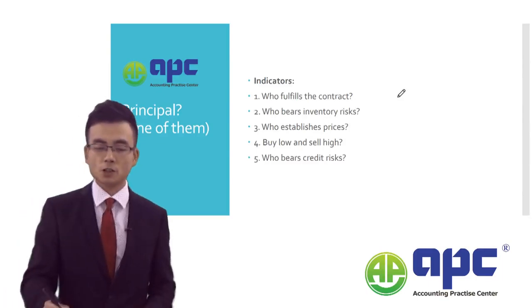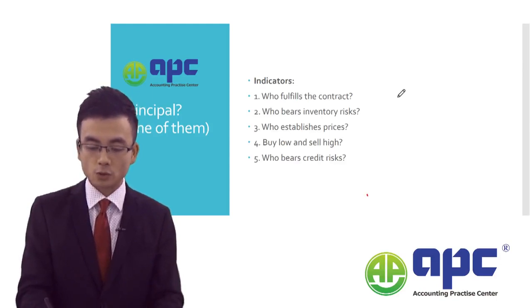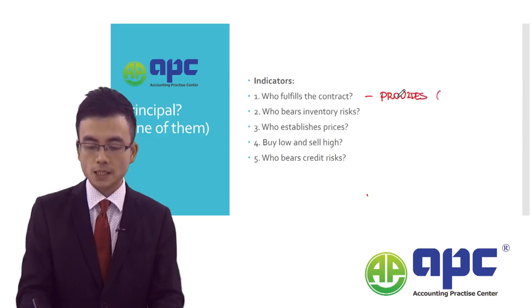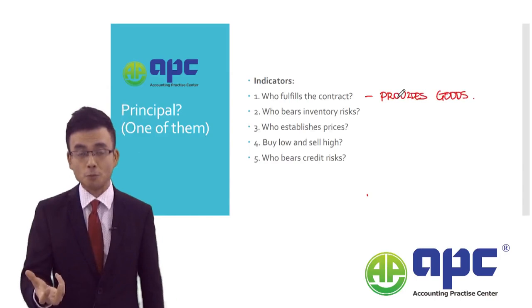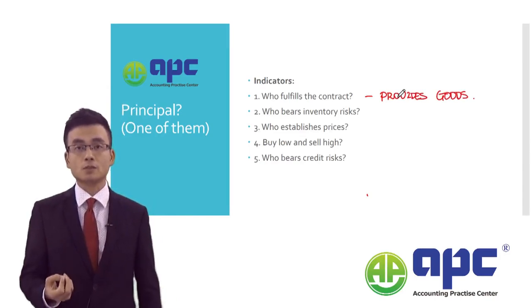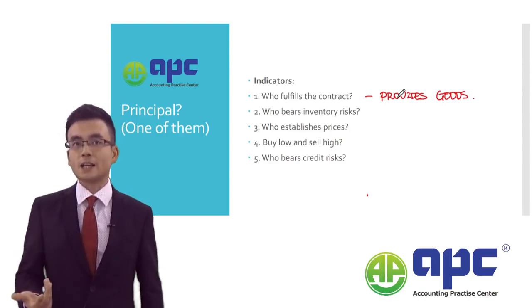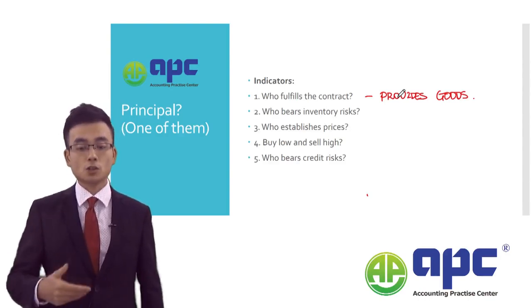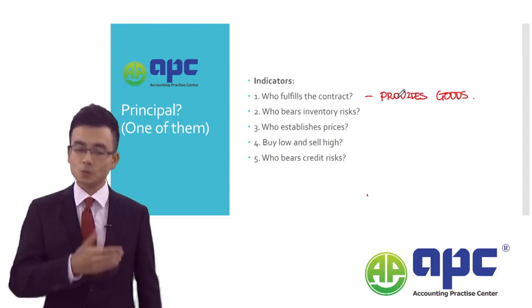The first question is: who fulfills the contract, which means who provides the services or goods? So if a platform only provides a platform rather than making the product, that party would be an agent. And of course, the party who fulfills the contract and provides the goods would be the principal.